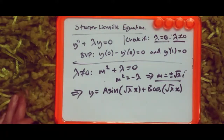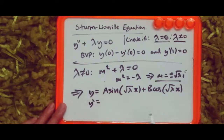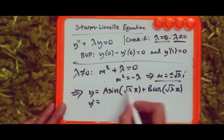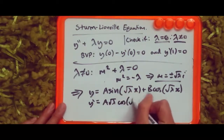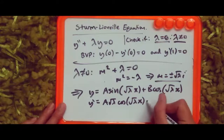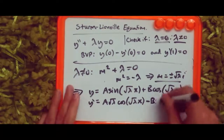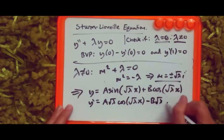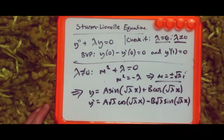The complex roots give the general solution y equals A sin(√λ x) plus B cos(√λ x). Taking the first derivative: y' equals A√λ cos(√λ x) minus B√λ sin(√λ x). This is the standard second-order complex resolution, and we'll need this derivative to apply the boundary conditions.